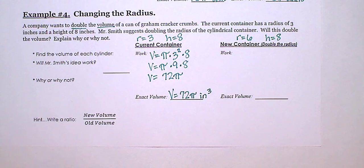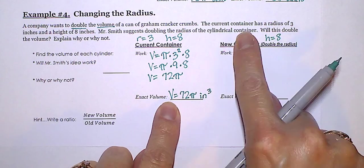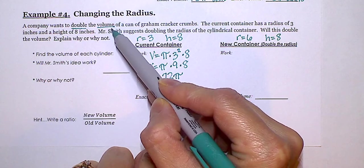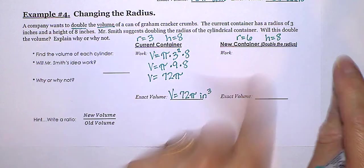So what Mr. Smith wants to do, he wants to double the volume. Now Mr. Smith only doubled the radius, so let's see if that worked. So if we doubled the volume, let's take a look here.